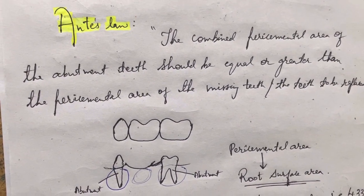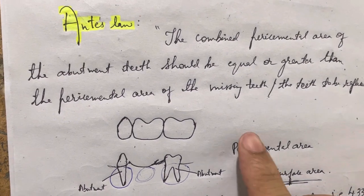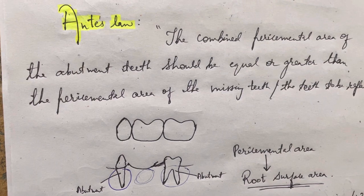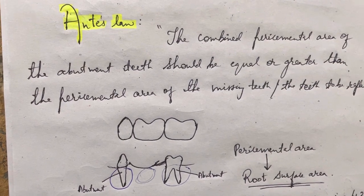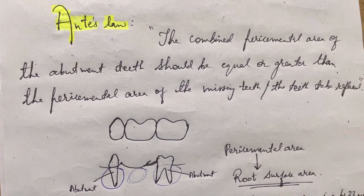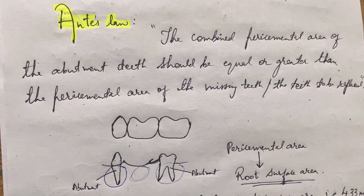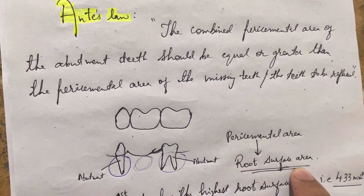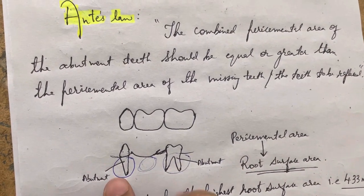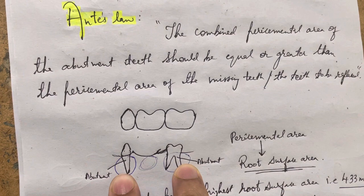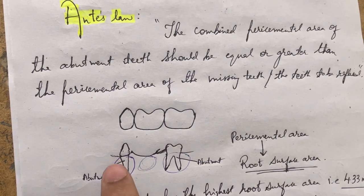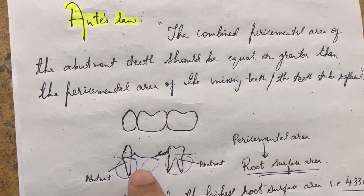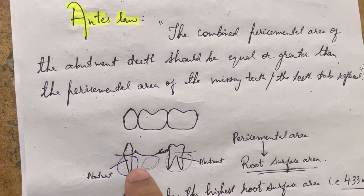Ante proposed Ante's Law, which states that the combined pericemental area of the abutment teeth should be equal or greater than the pericemental area of the missing teeth, or the teeth to be replaced. First of all, we should know what is pericemental area — pericemental area is the root surface area. These are the two abutment teeth.